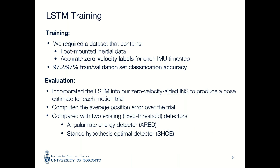We trained our LSTM-based zero velocity classifier using a dataset that we collected, which consisted of raw inertial data from a user who performed a variety of motions such as walking, running, shuffling, crawling, and climbing. Along with this data, we generated zero velocity labels for each IMU time step, which we used for supervised training of our classifier.